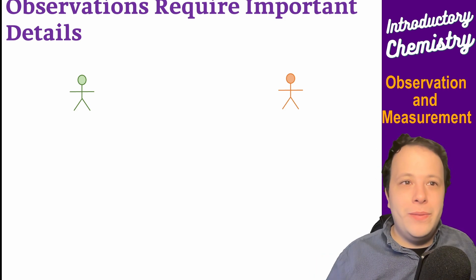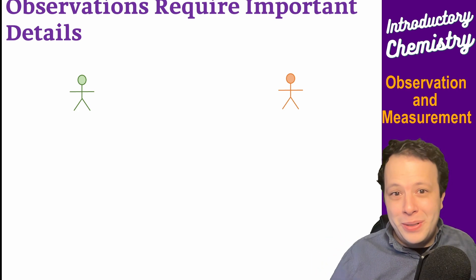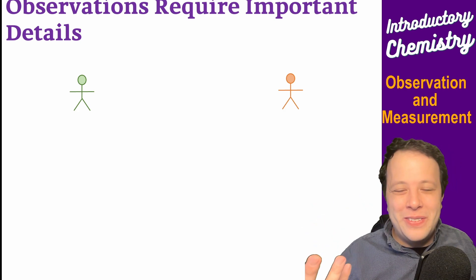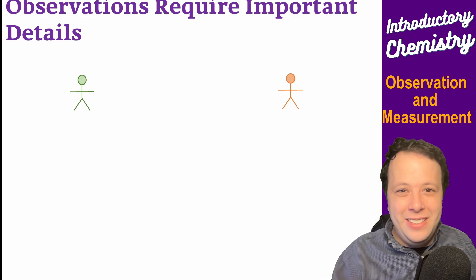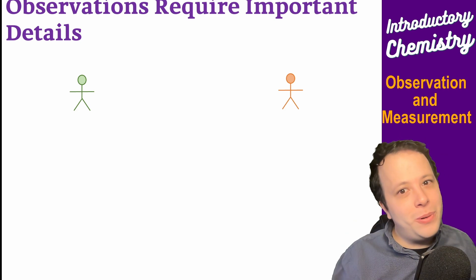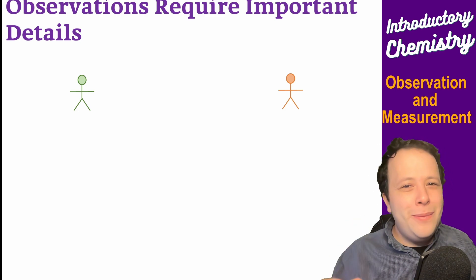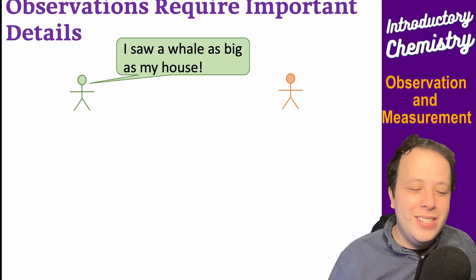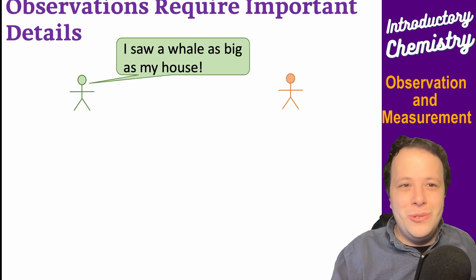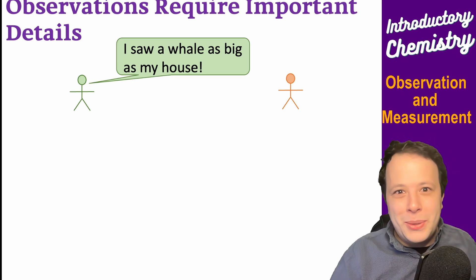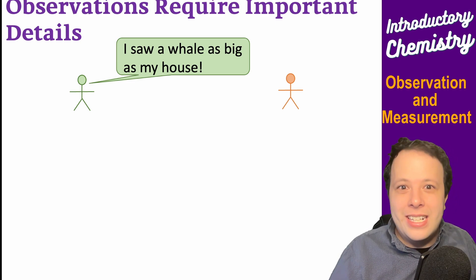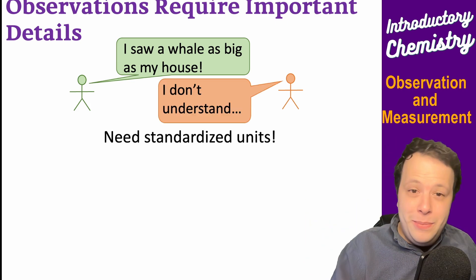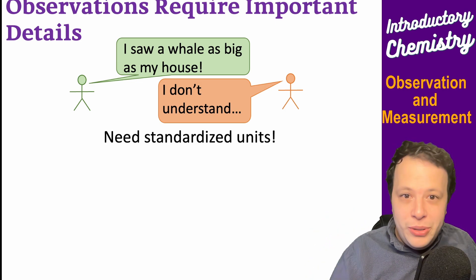When it comes to these theories, how do we describe them? Observations require detail, and they're really important. Qualitative and quantitative - quantity is the most important part of chemistry, I like to say. Chemistry is kind of like an applied math class. We're going to be doing a lot of math, meaning you have to be able to specify the quantity. If I said I saw a whale as big as my house, well, what does that mean? How big is the whale? What size is your house? It could be a mansion, it could be a normal size home, it could be an apartment.